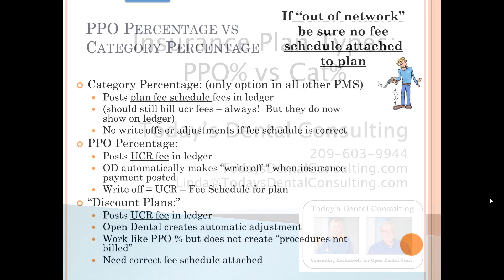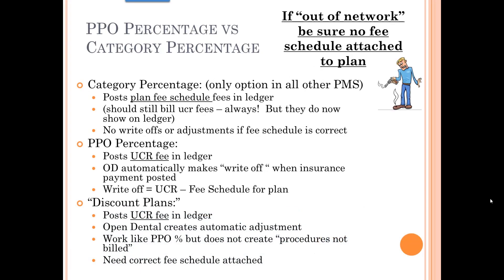With category percentage, you post the fee from the fee schedule into the ledger. So if your usual fee is $100 and your fee schedule fee for this plan — your contracted fee — is $80, it's going to post $80. You're still going to bill UCR to insurance, but you're going to post the fee schedule fee in the ledger.